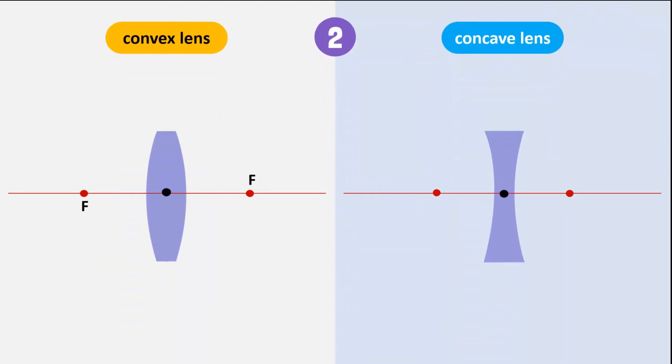When a ray of light passes through the optical center of the convex or concave lens, it does not refract after passing through it.